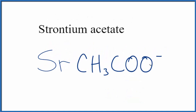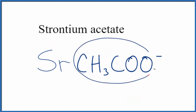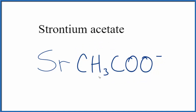Our acetate ion, the whole thing, has a 1-minus ionic charge. Strontium on the periodic table is in group 2, so it'll have a 2-plus ionic charge. Since this is a neutral compound — it doesn't say ion after it — the charges need to add up to 0.